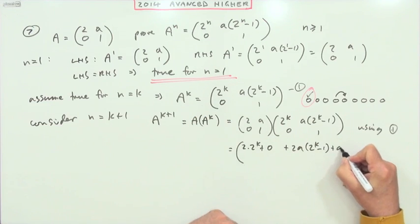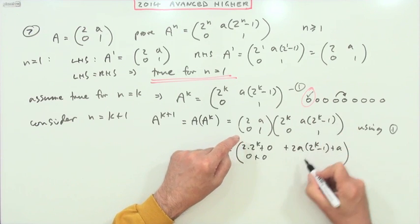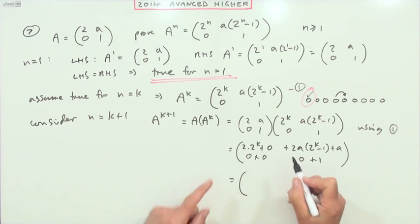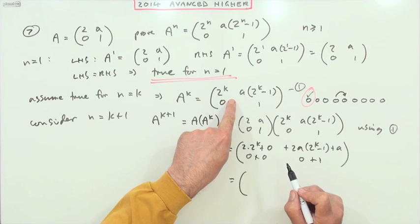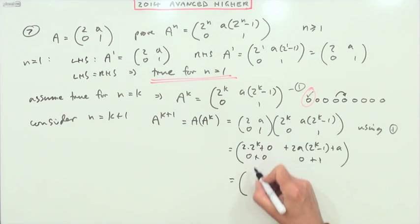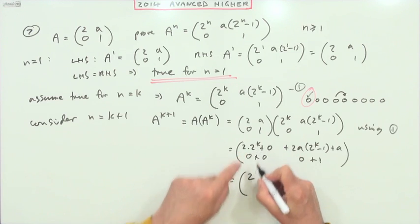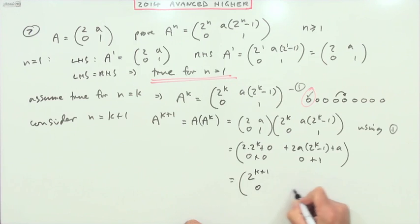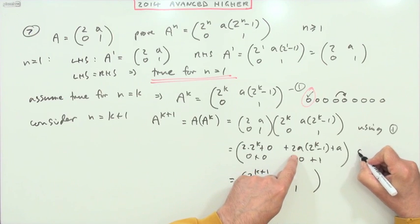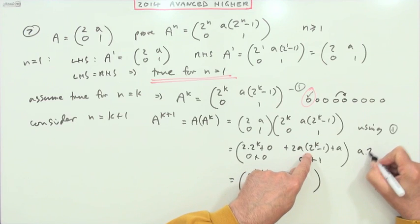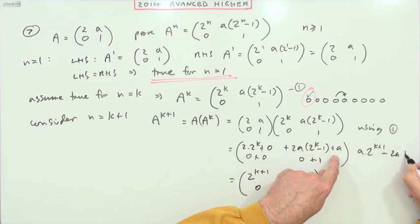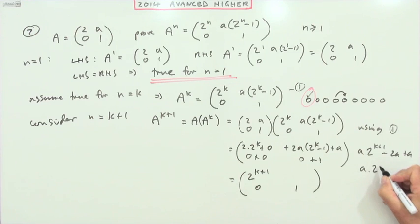1 plus an a. And that's just a, 0 plus a, 0, and a, 0 plus a, 1. So that would be—now what I'm aiming for is the same result only with n replaced by k plus 1. Well, 2 times 2 to the k is another power of 2, so that's 2 to the k plus 1. Those terms are okay. And I'll just do this bit of algebra to the side here. 2a times that will be a times 2 to the k plus 1 minus 2a plus an a. That's a times 2 to the k